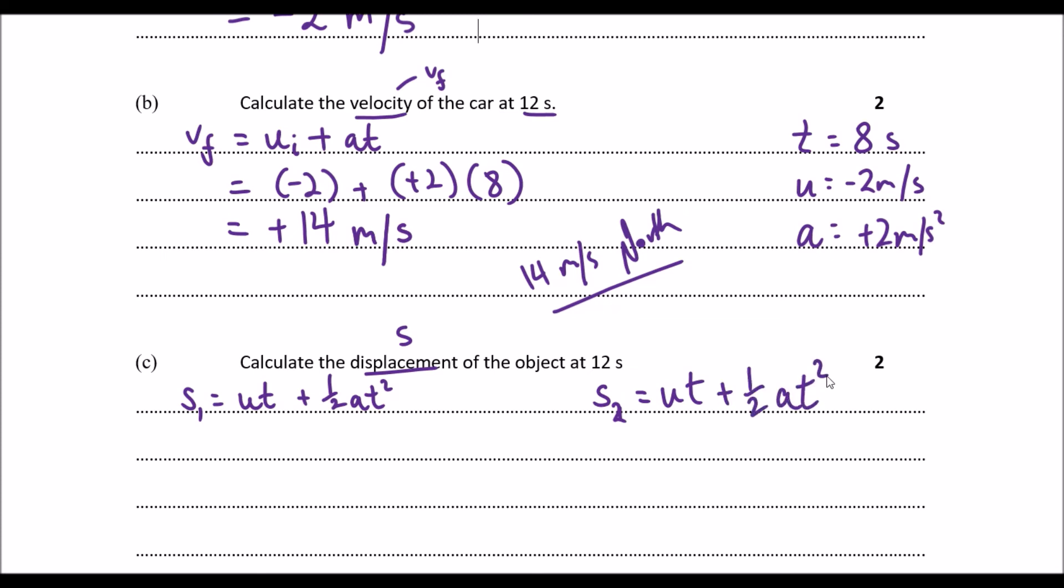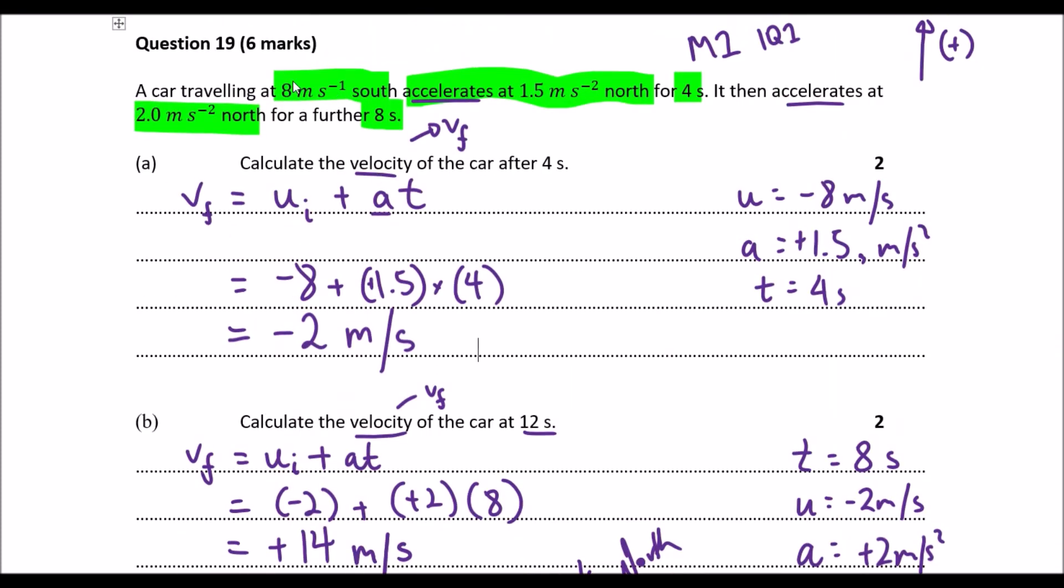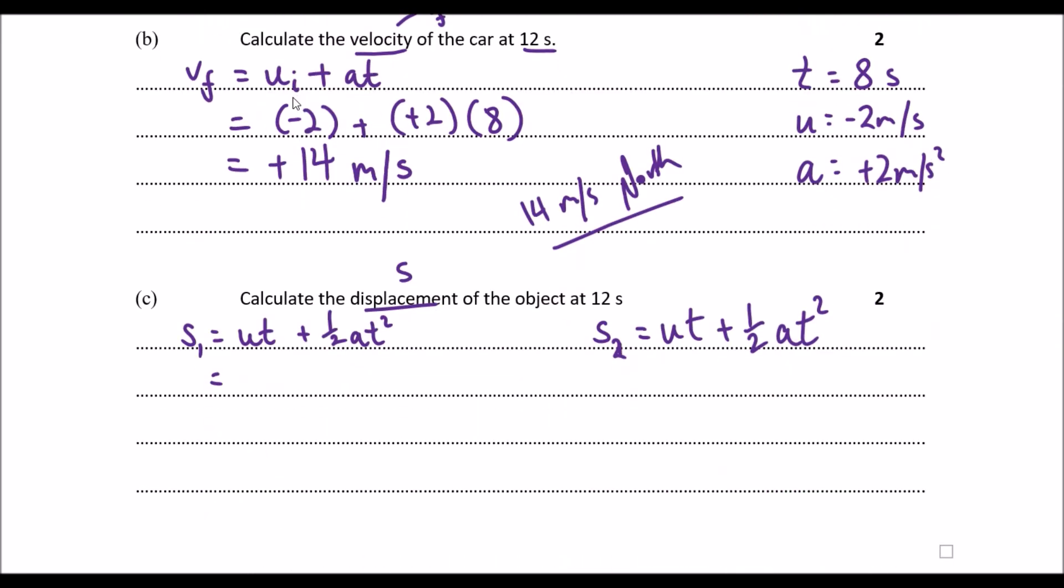So we're going to do this in two. The initial velocity we had here, according to our question, is negative eight. We travel for four seconds and we had an acceleration of positive 1.5 times four squared. That is our time. For our second one over here,